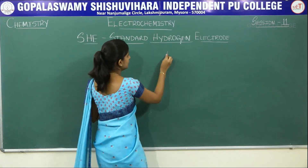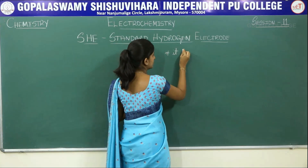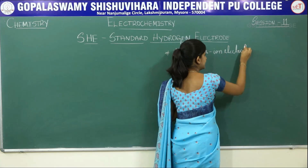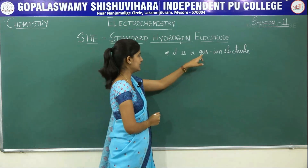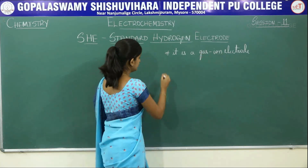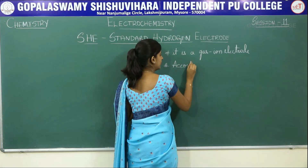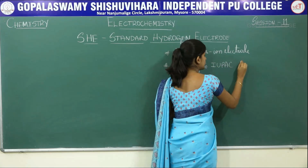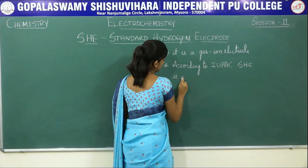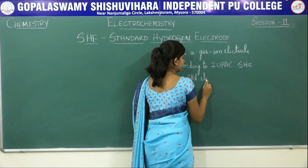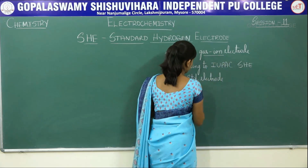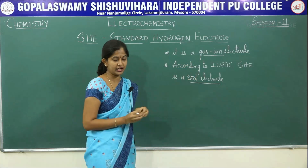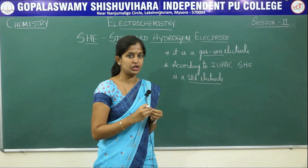The Standard Hydrogen Electrode is a gas ion electrode — I will be telling you what this gas ion electrode is. According to IUPAC, SHE is a standard electrode. What do you mean by standard electrode is, as I have already told you, with respect to this SHE, that is the Standard Hydrogen Electrode, you are fixing the values of electrode potentials for other electrodes.